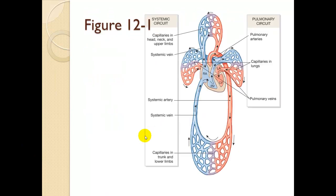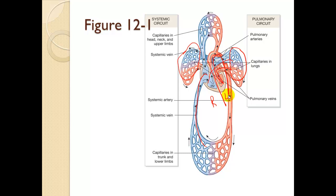We essentially have two hearts — a right heart and a left heart. The right heart's job is to get the blood from the venous side and get it into the lungs so that it can be oxygenated. The left heart's job is to take the blood from the lungs and pump it out to the body and the systemic circuit.